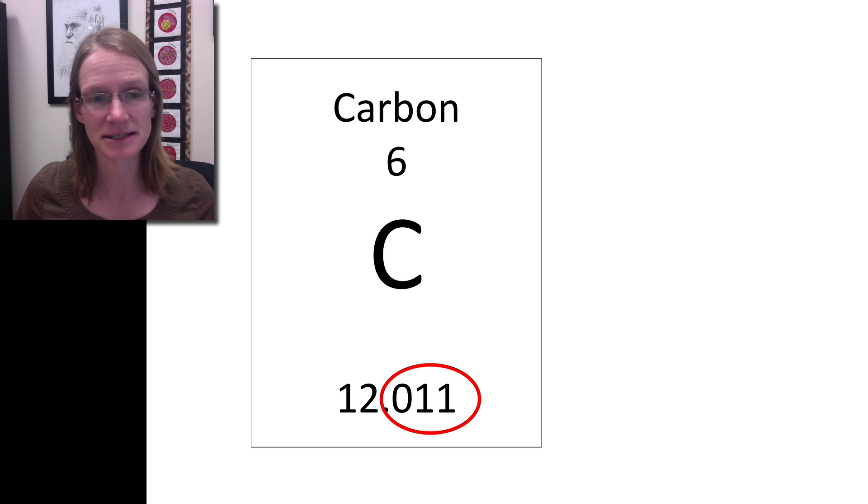But we could change the number of neutrons, and that could actually change the mass. Instead of having six neutrons, you could have seven neutrons. That would keep it a carbon because there'd be six protons, and if we had six electrons, that would keep the mass okay.